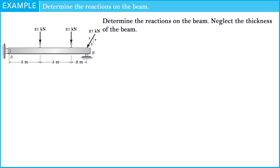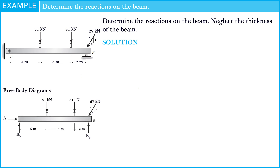First of all, look at the picture of the problem. We see that at point A is a pin support, and point B is a roller support. After that, we can draw the free body diagram as shown on the screen.